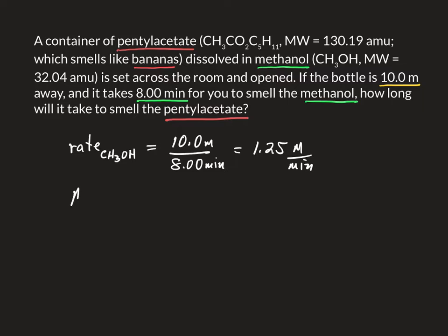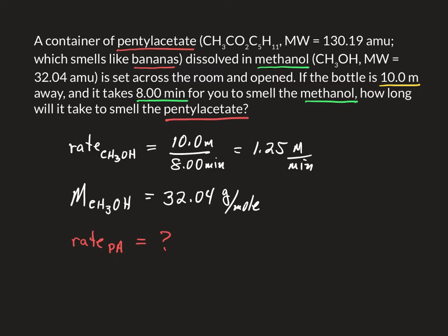Then we've got the molar mass of methanol. That's given in the problem, but we could have looked it up. It's 32.04 grams per mole — given in molecular weight, so we know the molar mass. And then we've got the rate at which the pentylacetate moves, which is unknown, and the molar mass of pentylacetate that we can get from the molecular weight.